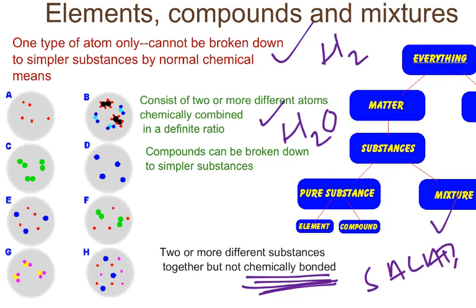If we look at this diagram of eight circles to our left, we have to identify whether they're elements, compounds, or mixtures. Pause the video and see if you can identify them. The first one looks like an element because it only has one type of atom. You can be asked on the test to identify elements, compounds, and mixtures based on pictures or based on chemical formulas — both are pretty simple once you've studied the definitions.